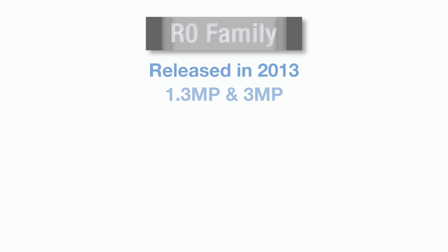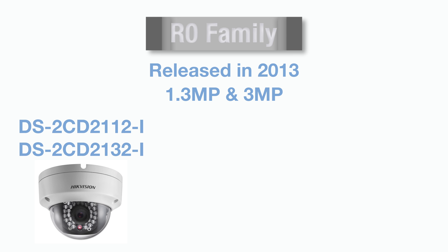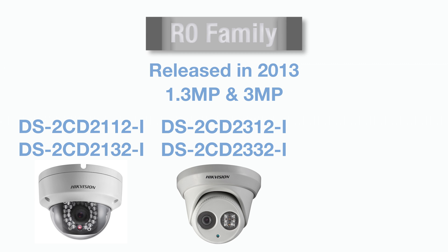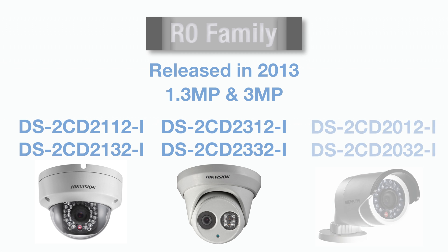We'll start by looking at the earliest family of cameras still found on our webshop — the R0 family. The R0 family cameras were first released in 2013 and only featured models with either a 1.3 megapixel or 3 megapixel sensor. Models include the 2112 and 2132 dome camera, the 2312 and 2332 turret camera, the 2012 and 2032 mini bullet camera, and many more. Although you will find these products on our webshop, you will no longer be able to buy them as the R0 family has been superseded by two more recent camera families.